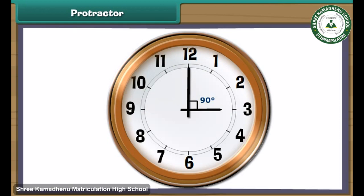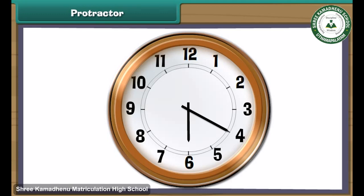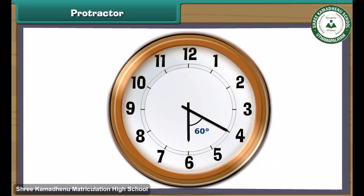Therefore, 3 o'clock makes a right angle. This clock shows 20 past 6 — the long hand is on 4 and the short hand is on 6. Place the protractor on the short hand and read the inner marking on which the long hand rests. It is 60 degrees. Therefore, the time 20 past 6 makes an acute angle.